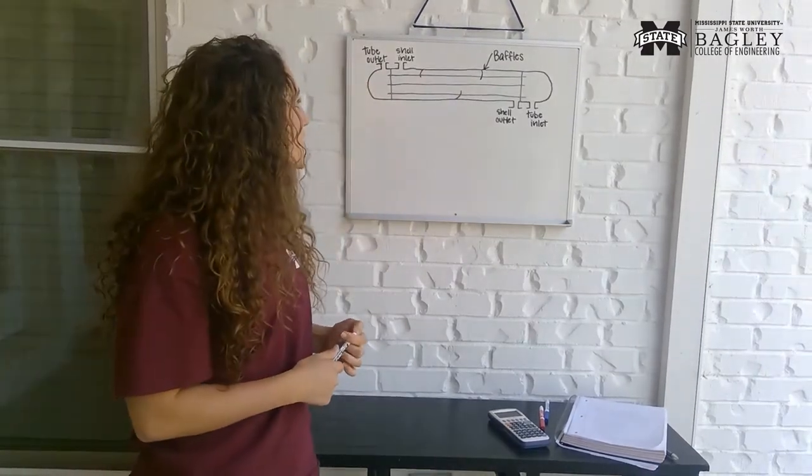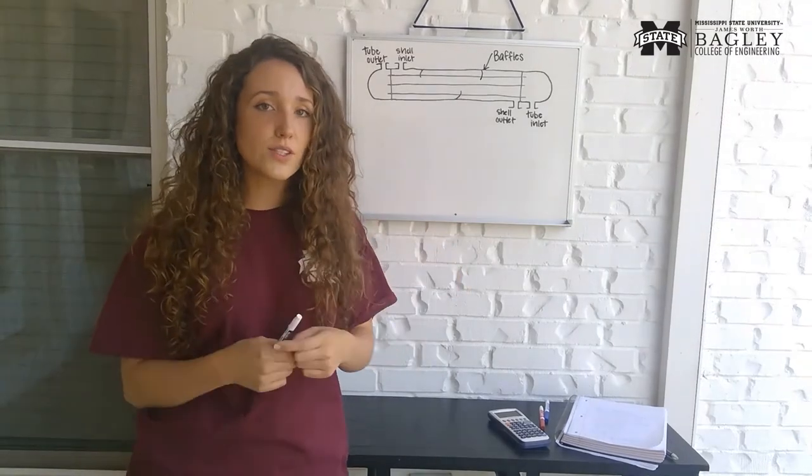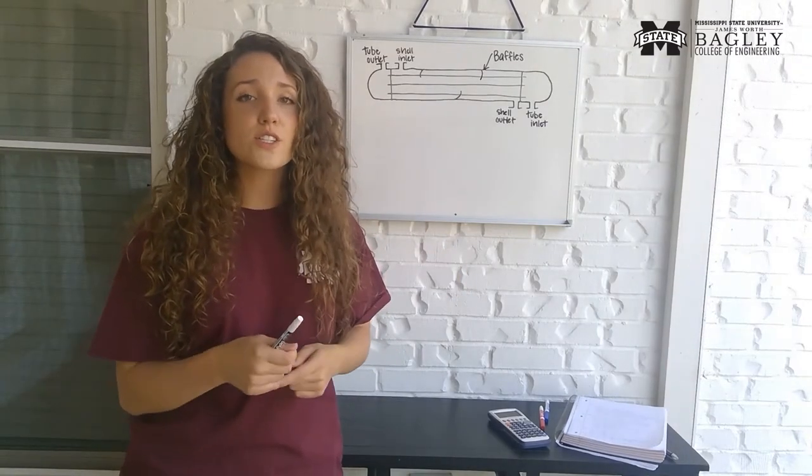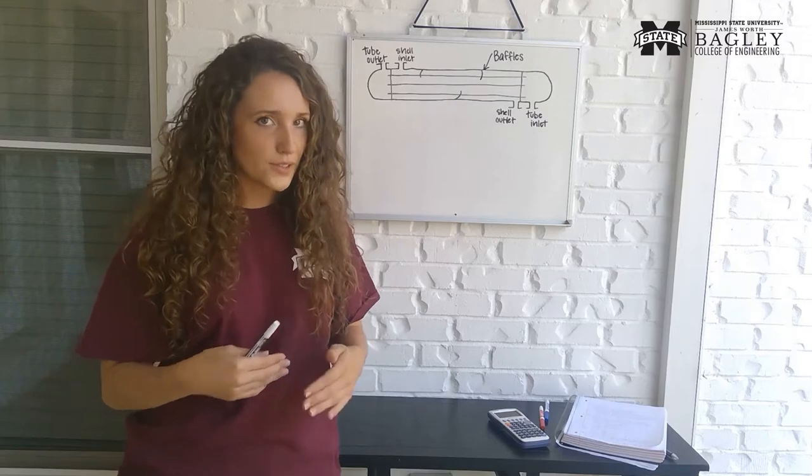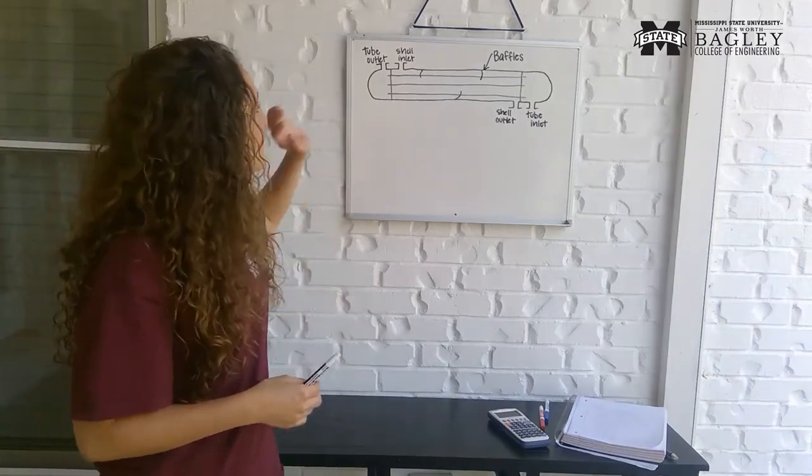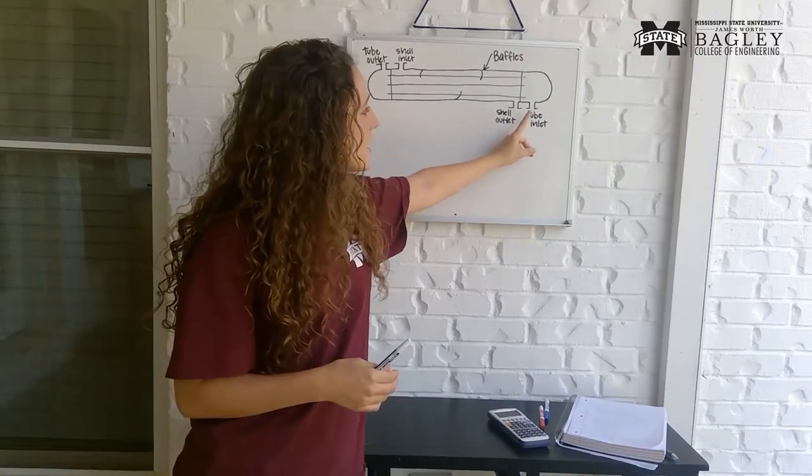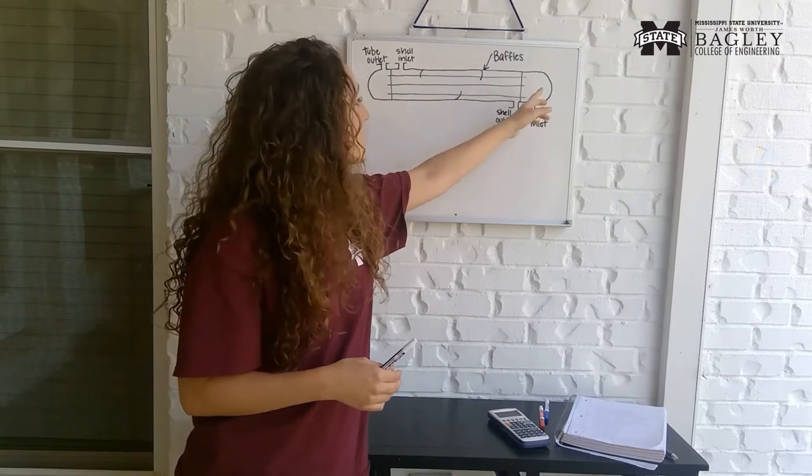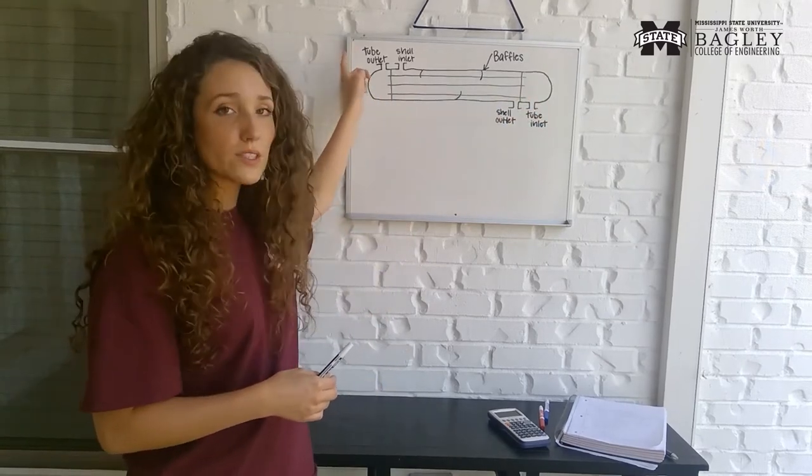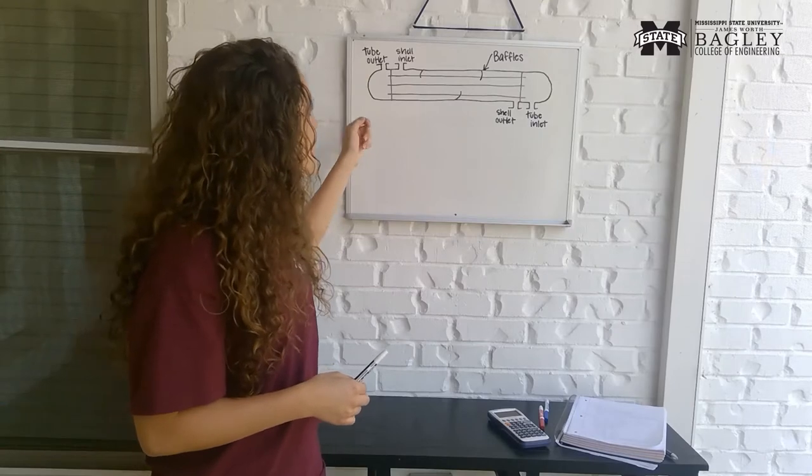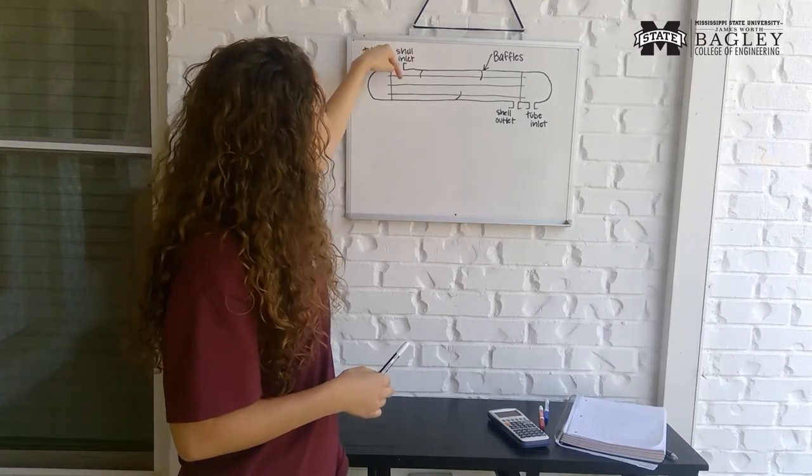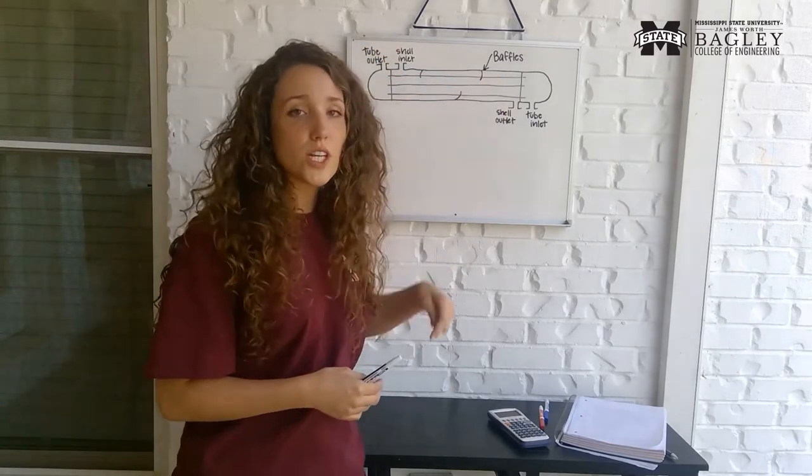A heat exchanger is supposed to allow for two different fluids to pass through the heat exchanger and transfer heat between the two fluids. So you have one fluid that will come into the tube inlet and pass through the tubes out the tube outlet. Then you have another fluid that will come in through the shell inlet and pass out the shell outlet.